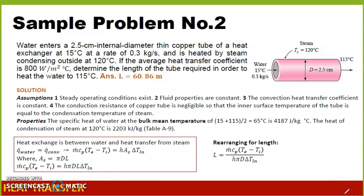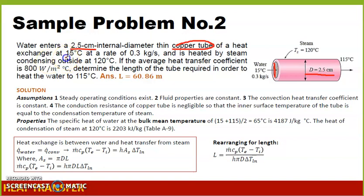Sample number 2 for internal forced convection. We have a pipe where water enters a 2.5 cm internal diameter copper tube. This is a heat exchanger where water enters at a temperature of 15 degrees Celsius and a mass flow rate of 0.3 kg per second. This water is being heated by an outside steam at 120 degrees Celsius, heating the water up to 115 degrees Celsius.